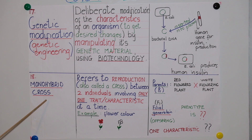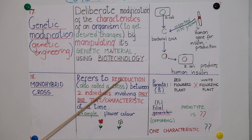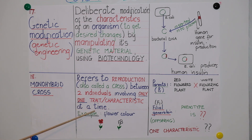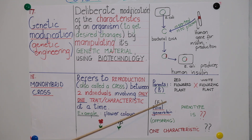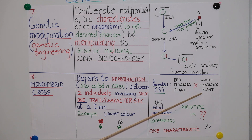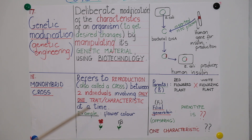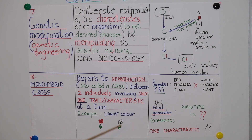The next concept is monohybrid cross. Mono is of Greek origin meaning one. It refers to reproduction — also called a cross — between two individuals involving only one trait or characteristic at a time. For example, flower colour. In plants there are thousands of different characteristics; however, this cross involves only one. For example, when a red-flowered plant is cross-pollinated with a white-flowering plant. It is called a monohybrid cross because it involves one characteristic: flower colour.